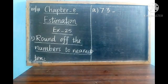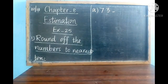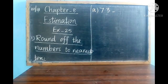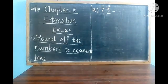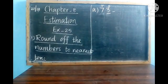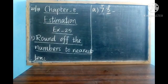The number is 73. Is 73 a one-digit or two-digit number? It is a two-digit number. What is in the ones place? 3 is at the ones place and 7 is at the tens place. Now look at the blackboard — we are going to round off the numbers to nearest 10. To round off to nearest 10, we have to underline the digit in the ones place.